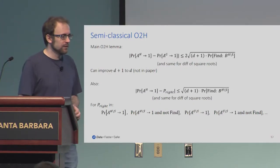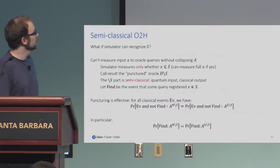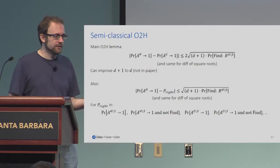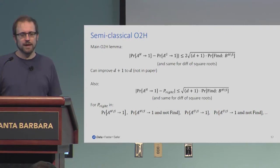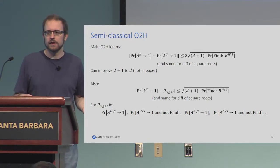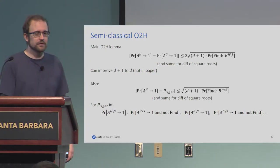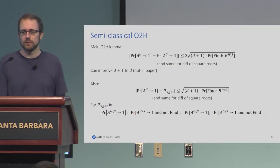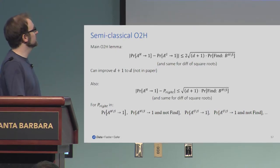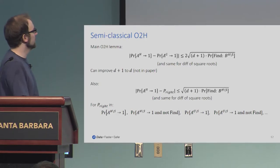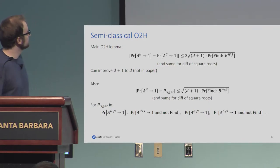The main lemma is that if you have these two sets, the bound now has D+1 inside the square root. Before it was 2D times sqrt(P_guess), now it's 2 times sqrt((D+1) * P_find). You can actually tighten the D+1 to a D — that's not in the paper, but it's not difficult. Also the difference between A^H and A^{H punctured} is bounded by this smaller term, as are A^{H punctured} and not-find, A^{G punctured}, A^{G punctured} and not-find — a fairly large number of things that really only differ in the case where you found an element of S.